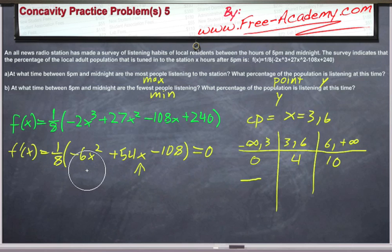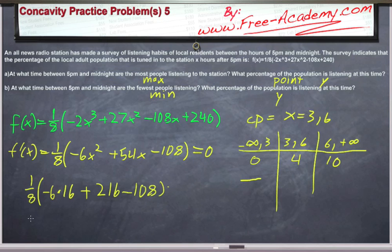Now let's do the same thing for positive four. This is going to give us one-eighth times negative six times sixteen plus two sixteen minus one-o-eight. And that's going to equal one-eighth, negative ninety-six plus two sixteen minus one-o-eight. Ninety-six minus one-o-eight, that's equal to negative two-o-four, so we have two-sixteen minus two-o-four, sorry this is two-o-four, so it's going to be a positive number. We don't need to know exactly what it is.